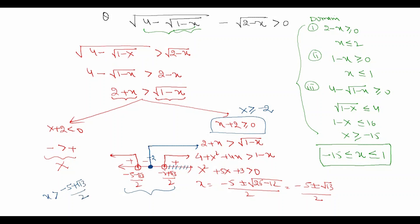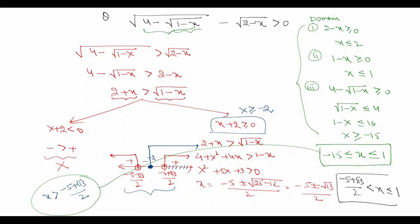Finally, taking the intersection of this result with the domain (-15 ≤ x ≤ 1), the final answer is (-5 + √13)/2 < x ≤ 1.